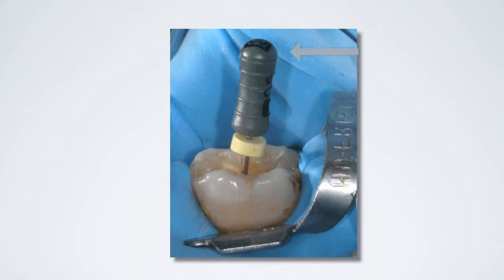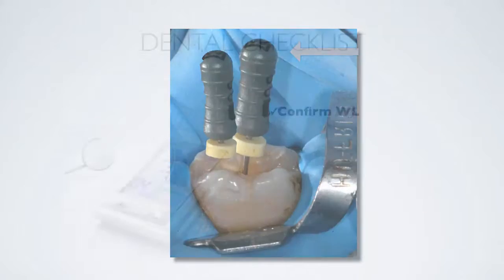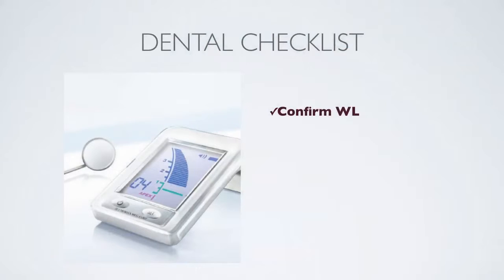This reference point gives me a reproducible position to reconfirm working length with an apex locator. Once we have confirmation with the apex locator we can then proceed to our final shaping with a filing technique of choice.